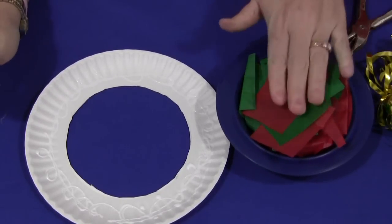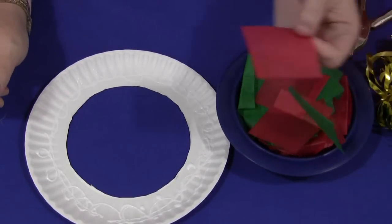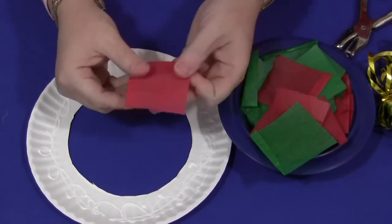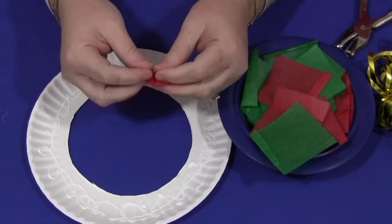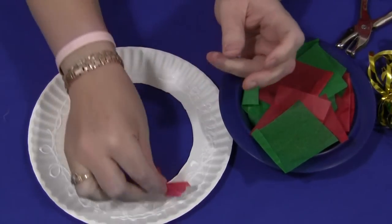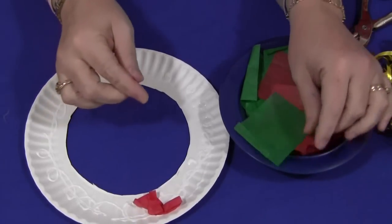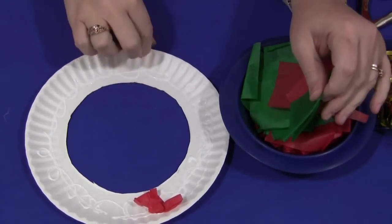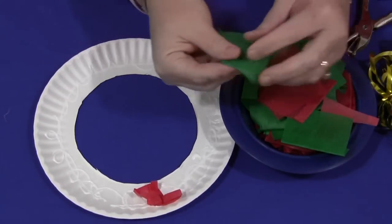Next step, and this is the fine motor skills part, is the tissue paper. The children would take a piece of tissue paper, scrunch it with their fingers, and press it into the glue. They would go all the way around the paper plate.